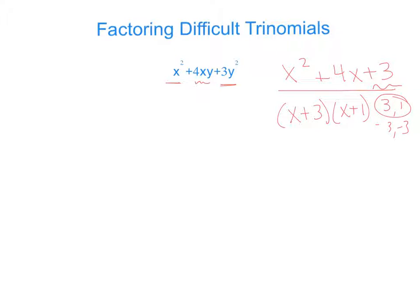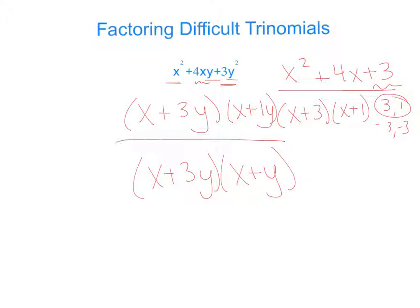Now, the only thing we're missing are those y's. So all we have to do is do x plus 3y and x plus 1y. So our answer, x plus 3y and x plus 1y. We don't write the 1 because it's simplest form.